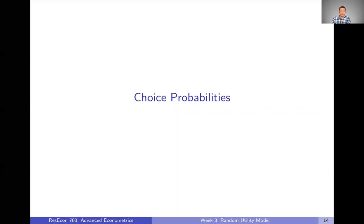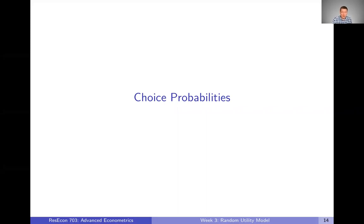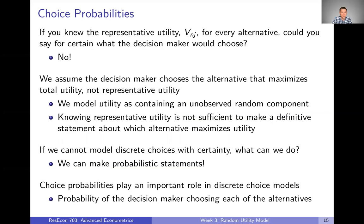In this video we're going to talk about choice probabilities. At the end of the last video I said these are going to be really important characteristics, a really important piece of discrete choice models, and ultimately how we're going to estimate those structural parameters that we also talked about at the end of the last video.